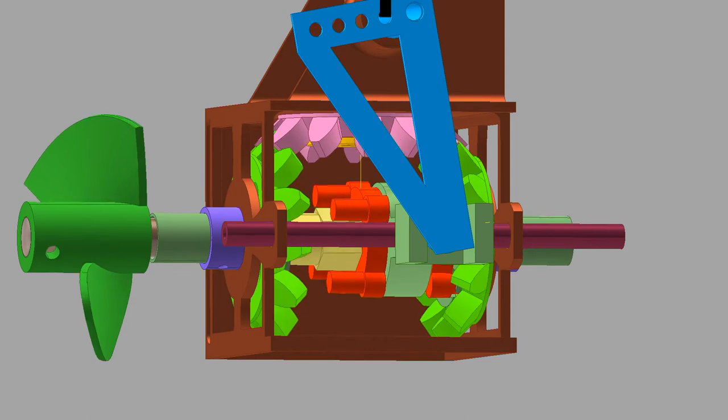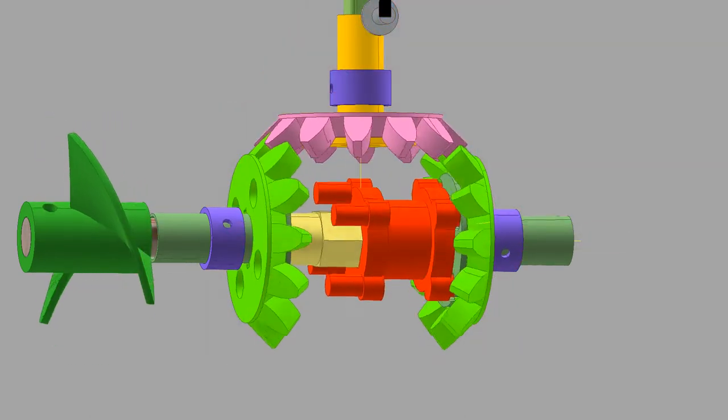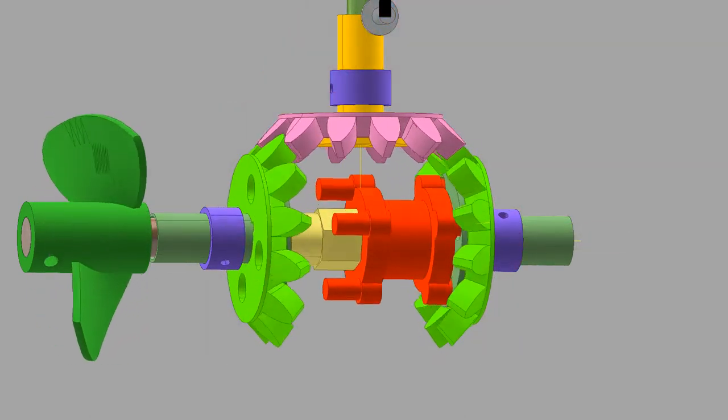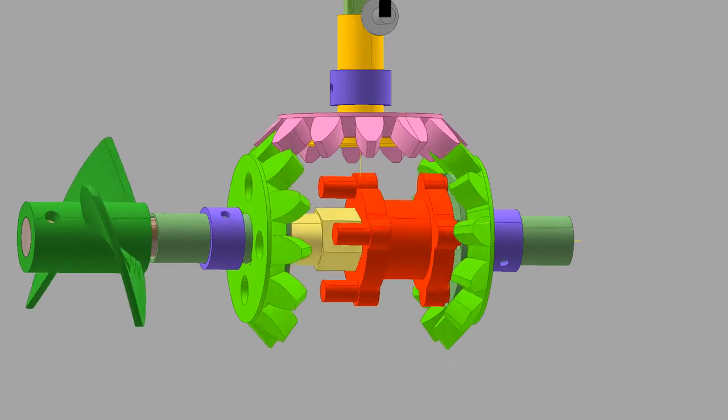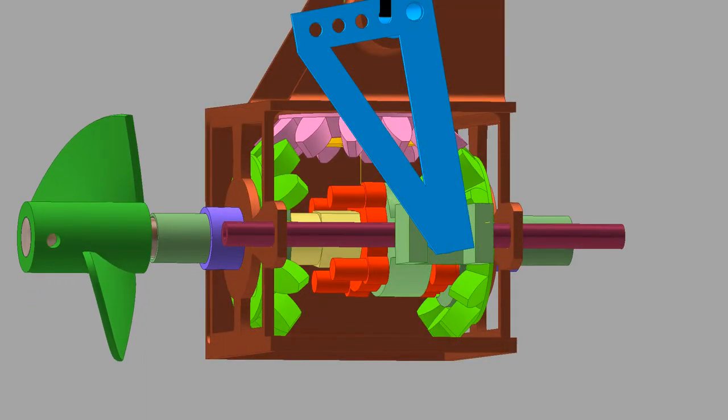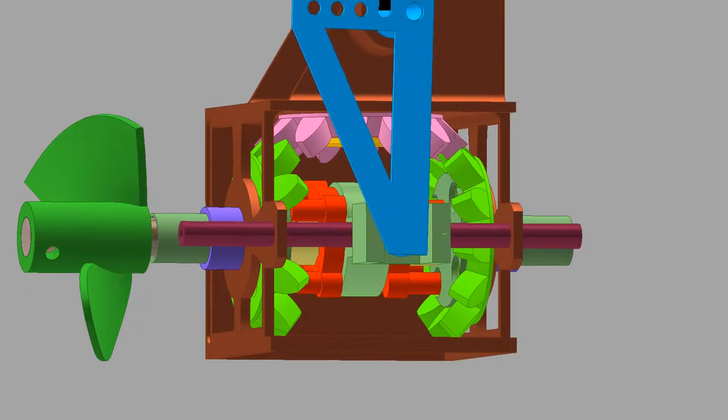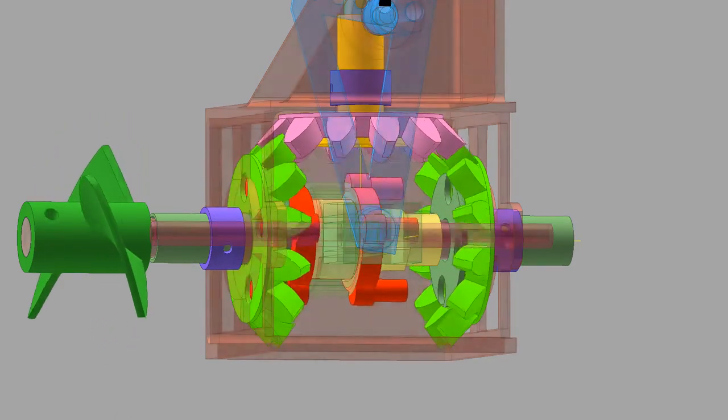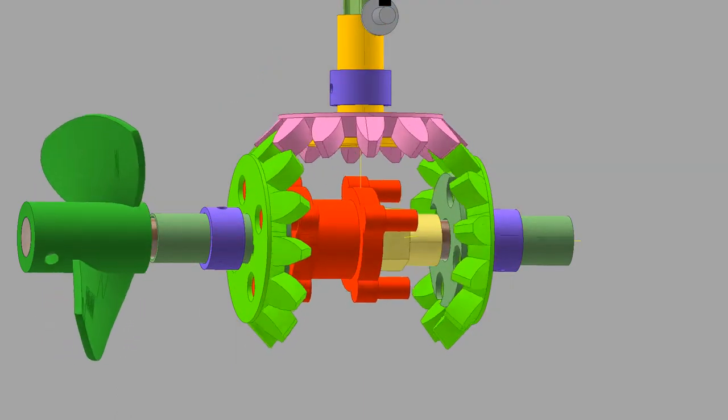Here it is shifted into forward, the prop starts to turn clockwise. And now it is shifted into reverse, and you can see the prop rotational direction change. It's now turning counterclockwise.